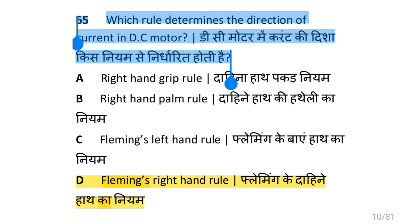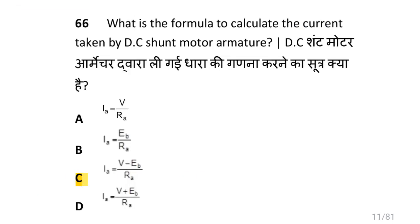Which rule determines the direction of current in DC motor? That is Fleming's right hand rule. What is the formula to calculate the current taken by DC shunt motor armature? That is Ia equals V minus Eb divided by Ra.